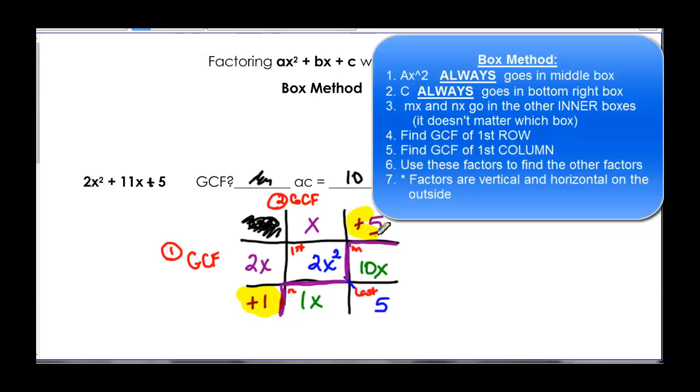We want to check and make sure that these two things, 1 and 5, really do give me 5. And once I'm done with that, then we can come back and write our factors.